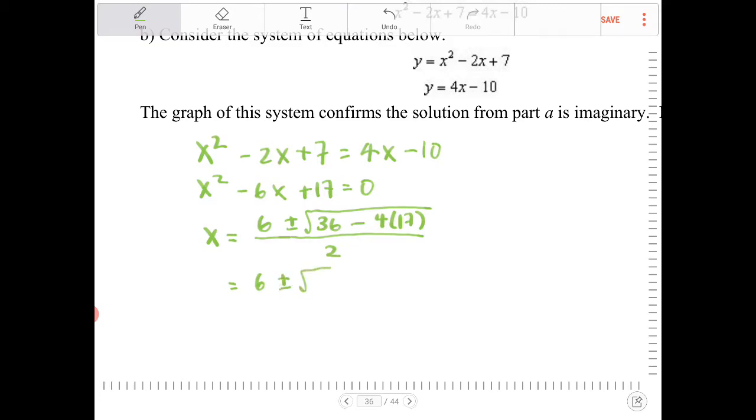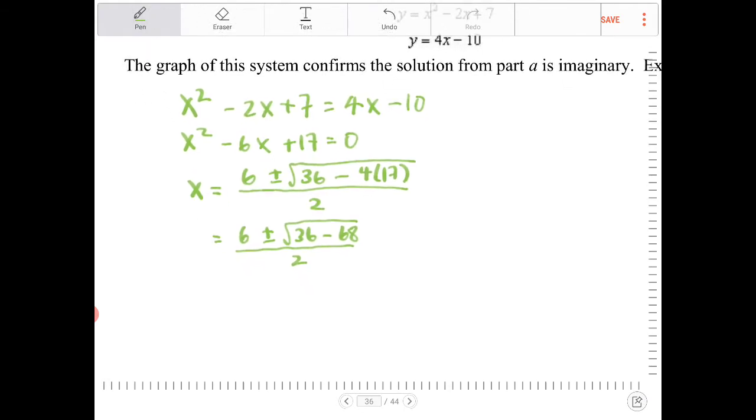So 6 plus or minus square root of 36 minus 68. All over 2. And that turns into negative 32. So this is 6 plus or minus radical negative 32. All over 2.